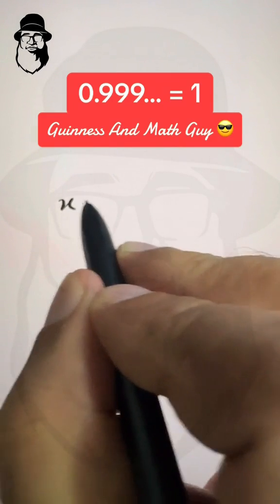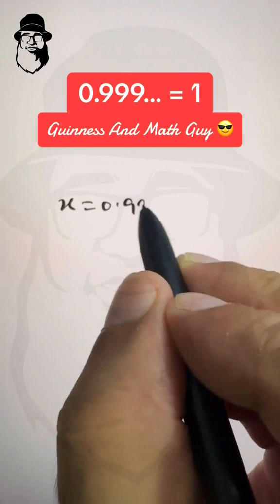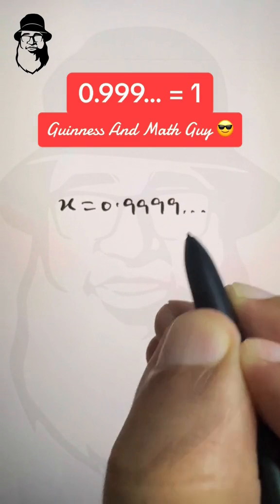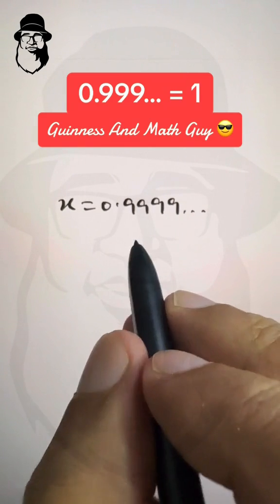Let's say x is equal to 0.9999 repeating. Now if we multiply both sides by 10...